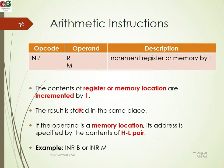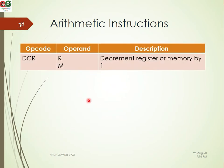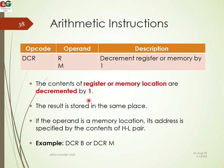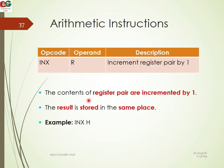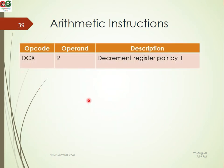INR is increment register — the content of the register is incremented by one. DCR is decrement register — the content of the register is decremented by one. For register pairs, INX increments the register pair by one, and DCX decrements the register pair by one.